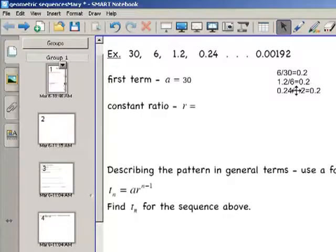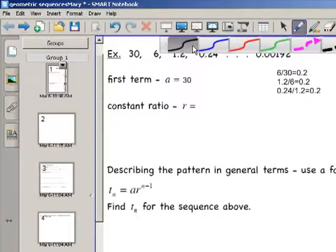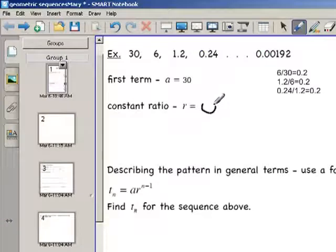As we see this pattern evolving, we now can say with some certainty that we have a geometric sequence, and the constant ratio is the value 0.2.